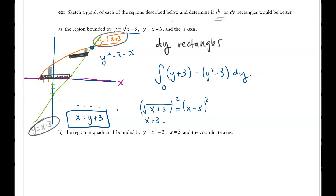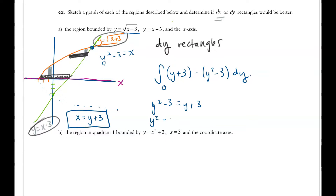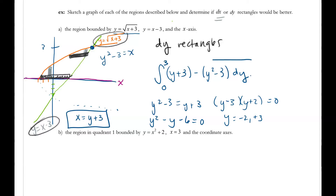To find the limits, we set y squared minus 3 equal to y plus 3. Rearranging gives y squared minus y minus 6 equals 0, which factors as (y minus 3)(y plus 2) equals 0, giving y equals negative 2 and y equals 3. The upper intersection is y equals 3, and the lower limit is the x-axis where y equals 0. So the integral runs from 0 to 3.